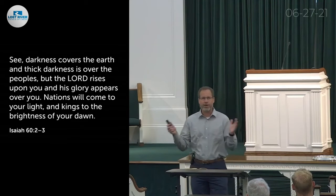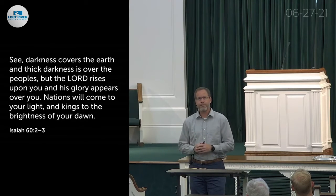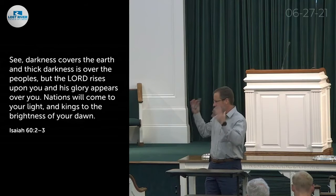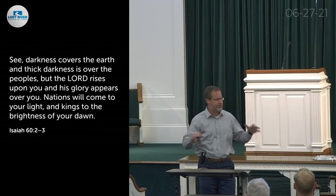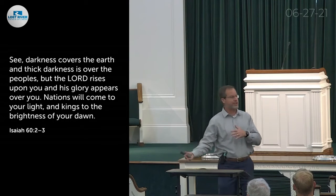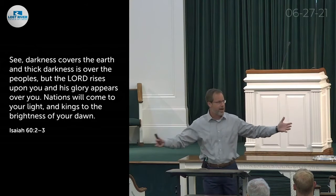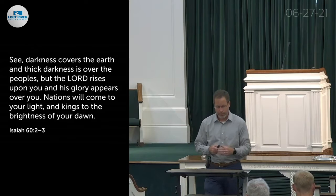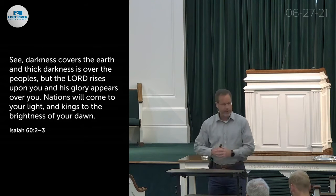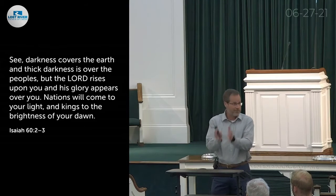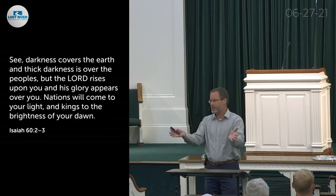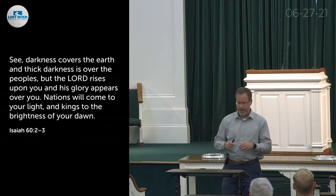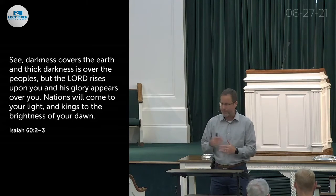In Isaiah 60:2-3 it says, 'Darkness covers the earth and thick darkness is over the peoples, but the Lord rises upon you and His glory appears over you.' He's clearly using the image of a sunrise — a time of gloom and despair — but the Lord like the sun is rising and His glory is beginning to manifest. As a result, nations will come to His light and kings to the brightness of your dawn.